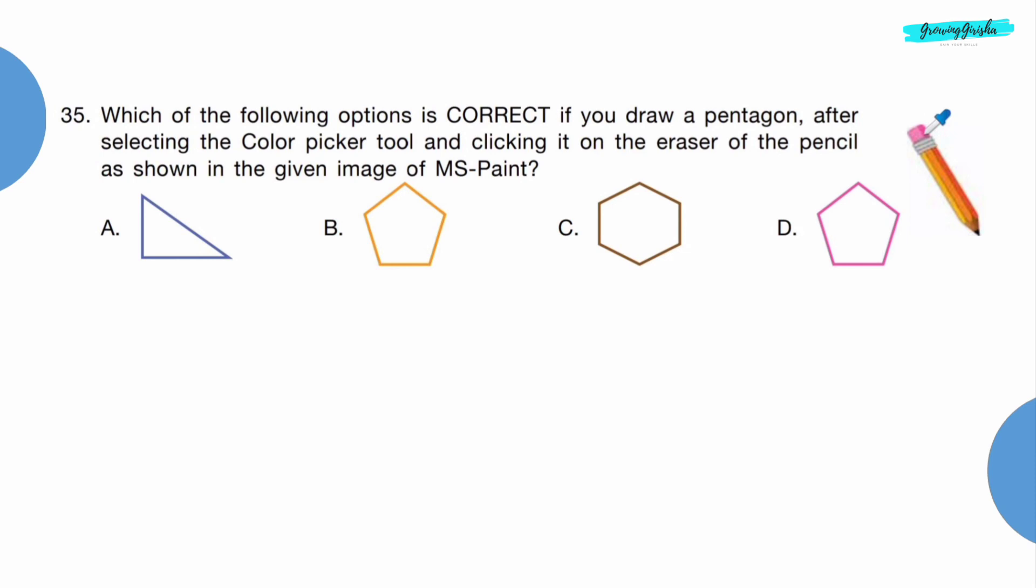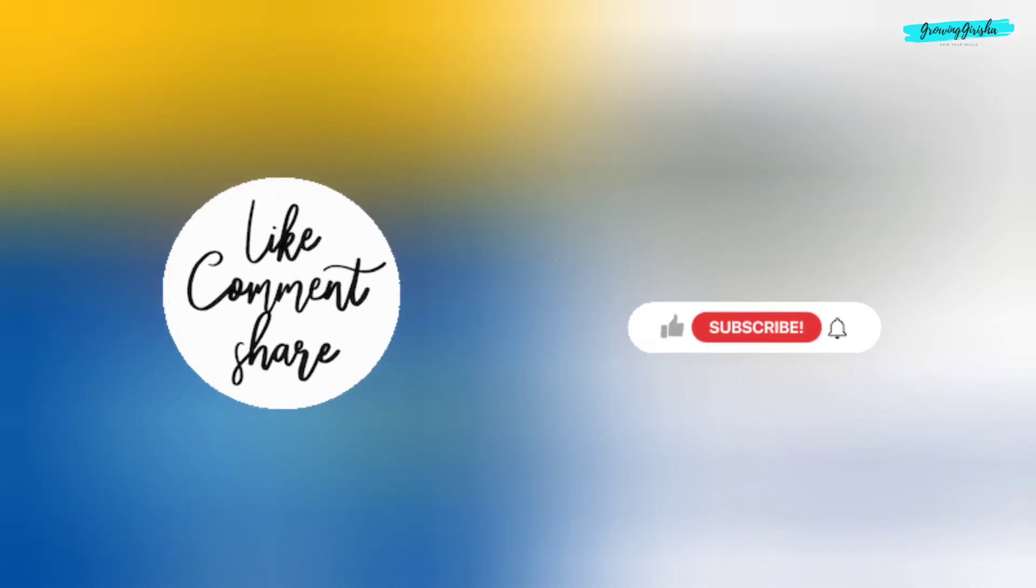Question 35: Which of the following options is correct if you draw a pentagon after selecting the color picker tool and clicking it on the eraser of the pencil as shown in the given image of MS Paint? Option D. Thank you for watching. Like, comment, subscribe. Soon another video. Bye.